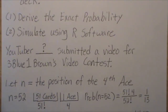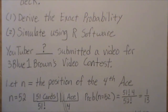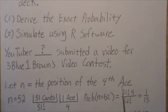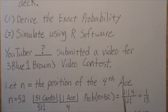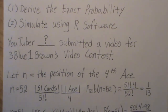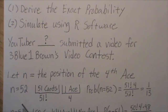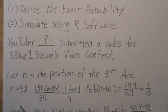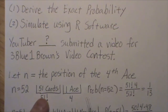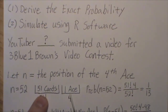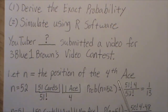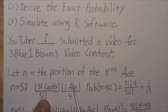This wouldn't be a statistics video if we didn't create a random variable. So let's let N be the position of the fourth ace in a randomly shuffled deck. This is how you calculate the probability. Let's let N equal 52 — we want the fourth ace to be the last card in the deck. The way I think about this is you create two bins, and the last bin has to be an ace.